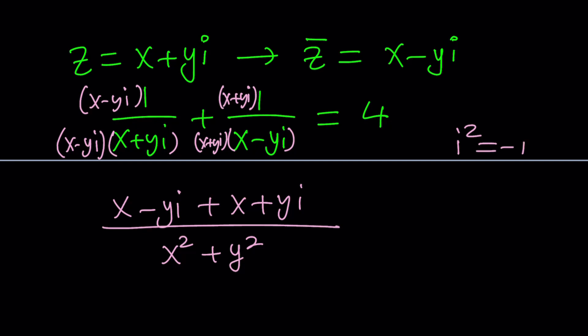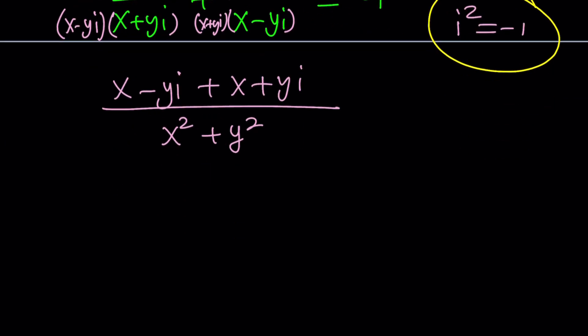Something that you should never ever forget. You may forget everything, but don't forget i squared equals negative 1. So this is equal to 4. And we can cancel out y I. And then x plus x is 2x. Nice. And x squared plus y squared equals 4.